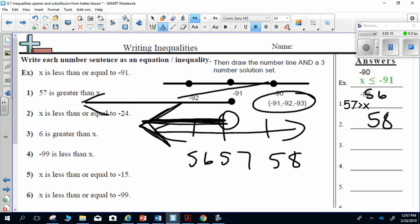Last thing I'm going to do is write my solution set, and it will not include the 57, so it could be 56, 55, 54.